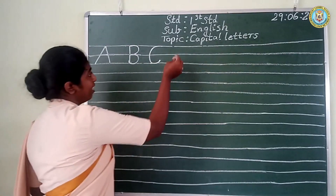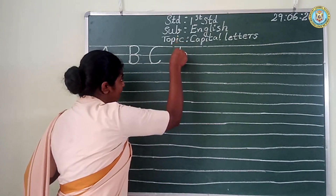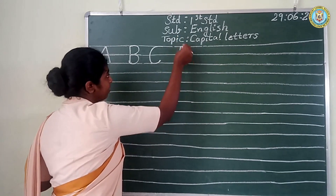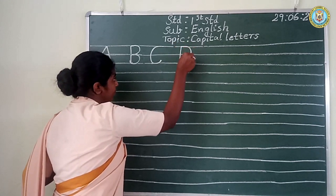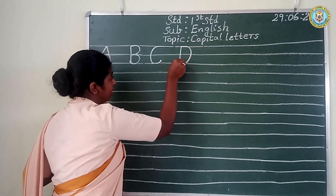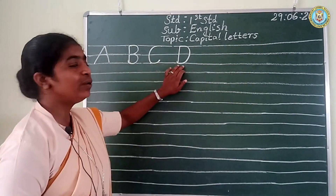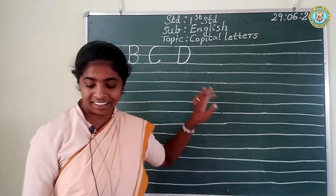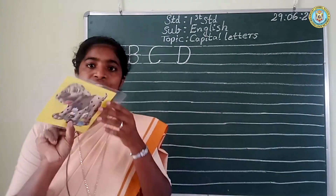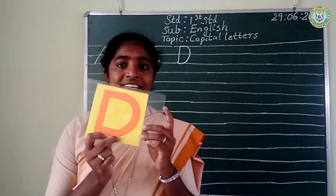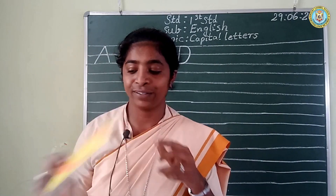Next letter. Straight line and the big curve. D. D for dog. D for dog.